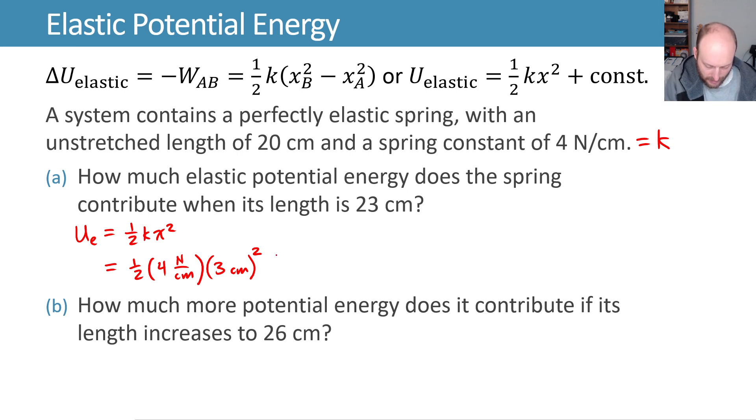Probably the easiest is to do 1 meter is 100 cm, because we have centimeters squared divided by centimeters, so we have one more to get rid of there. And once we do that, we end up with 0.18 joules.